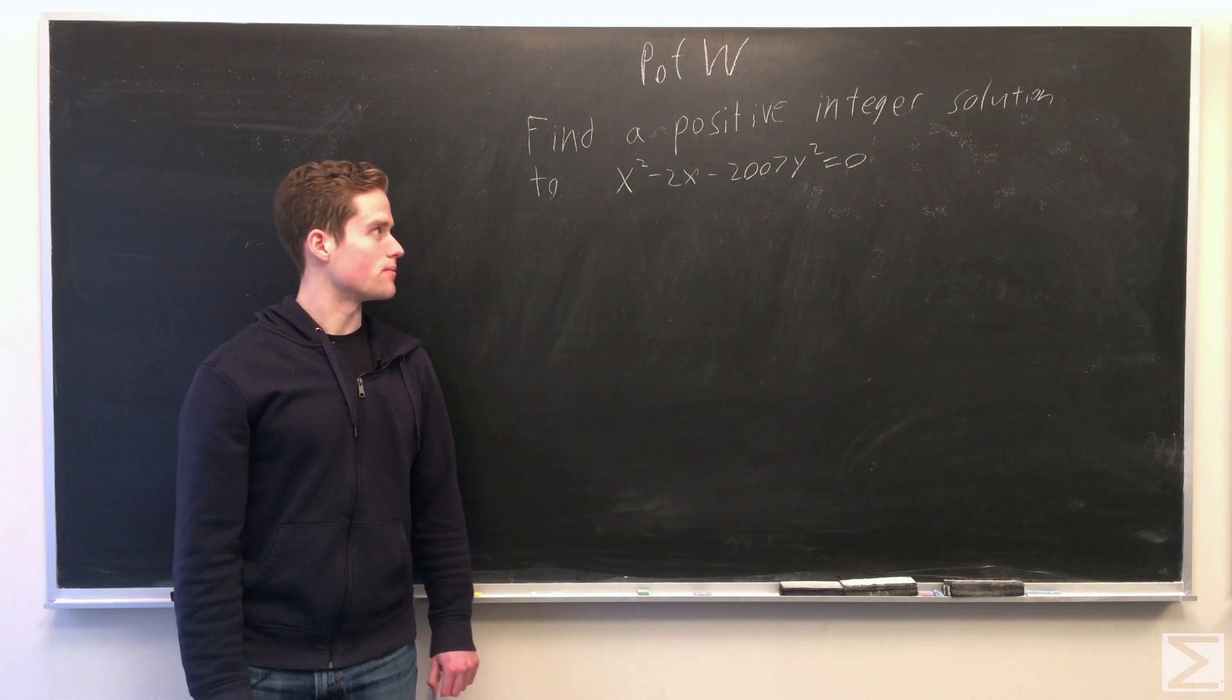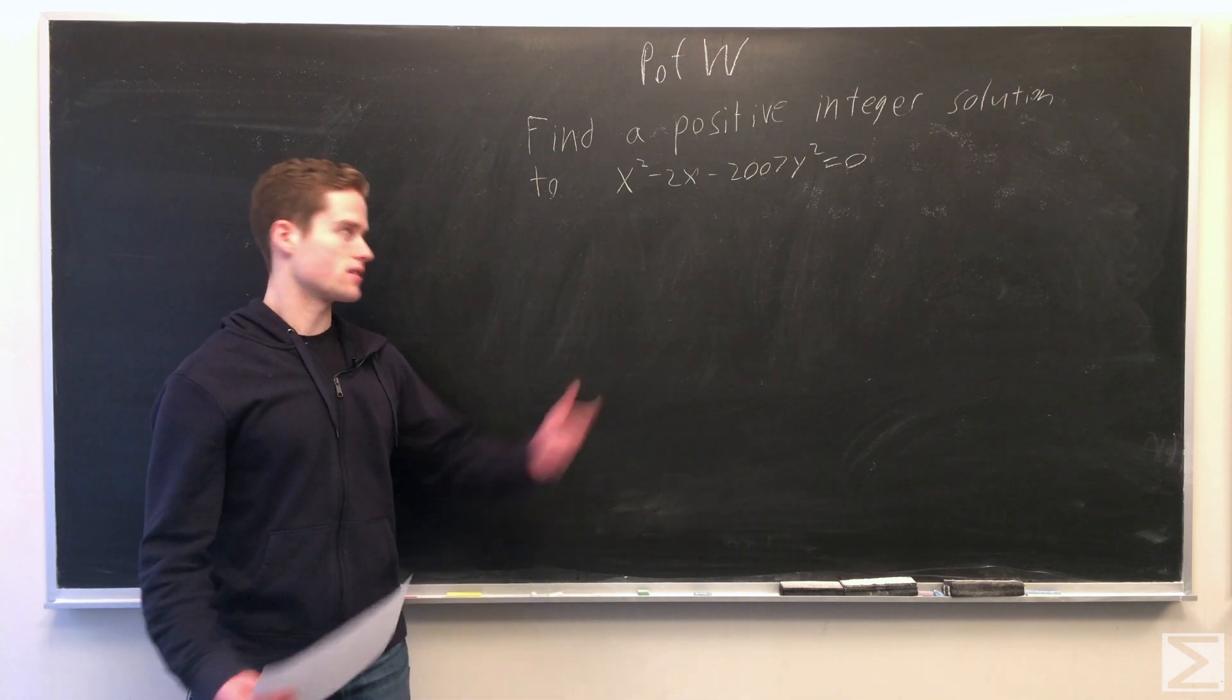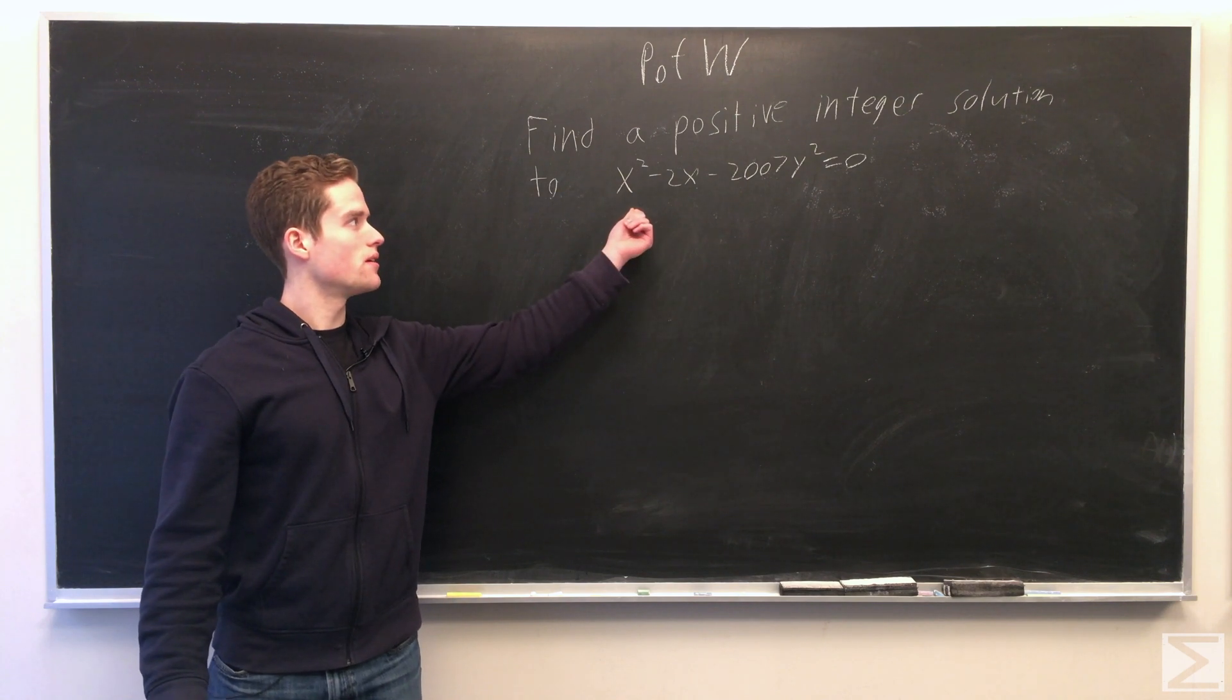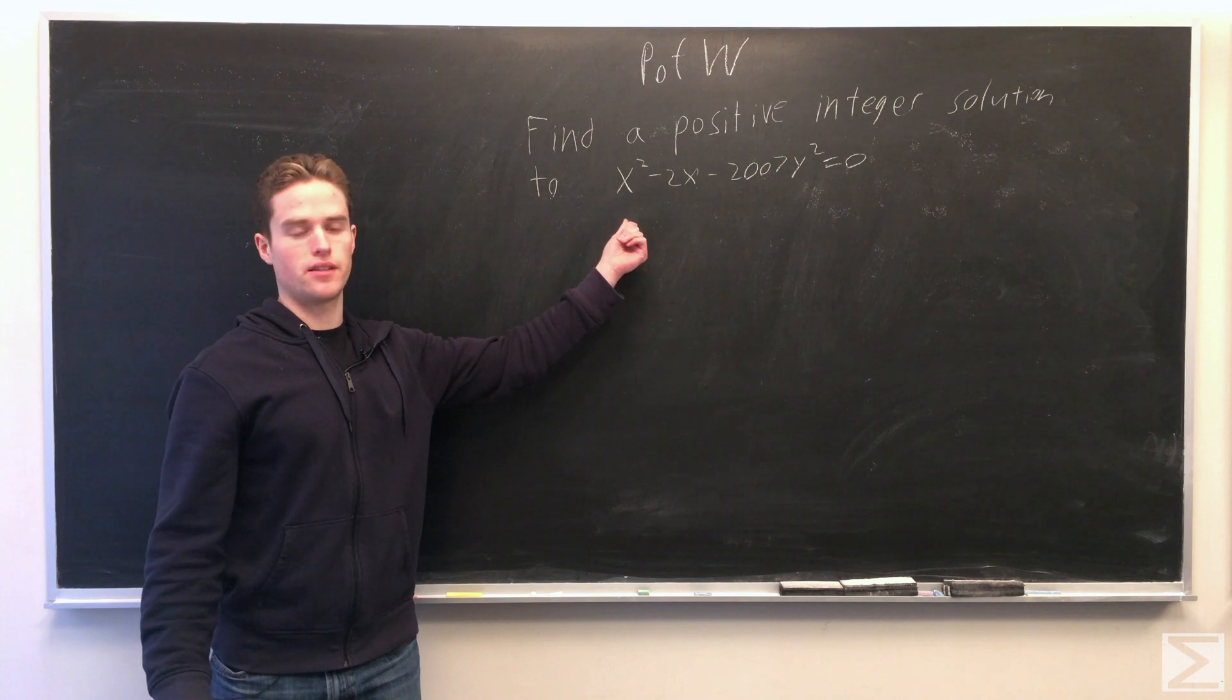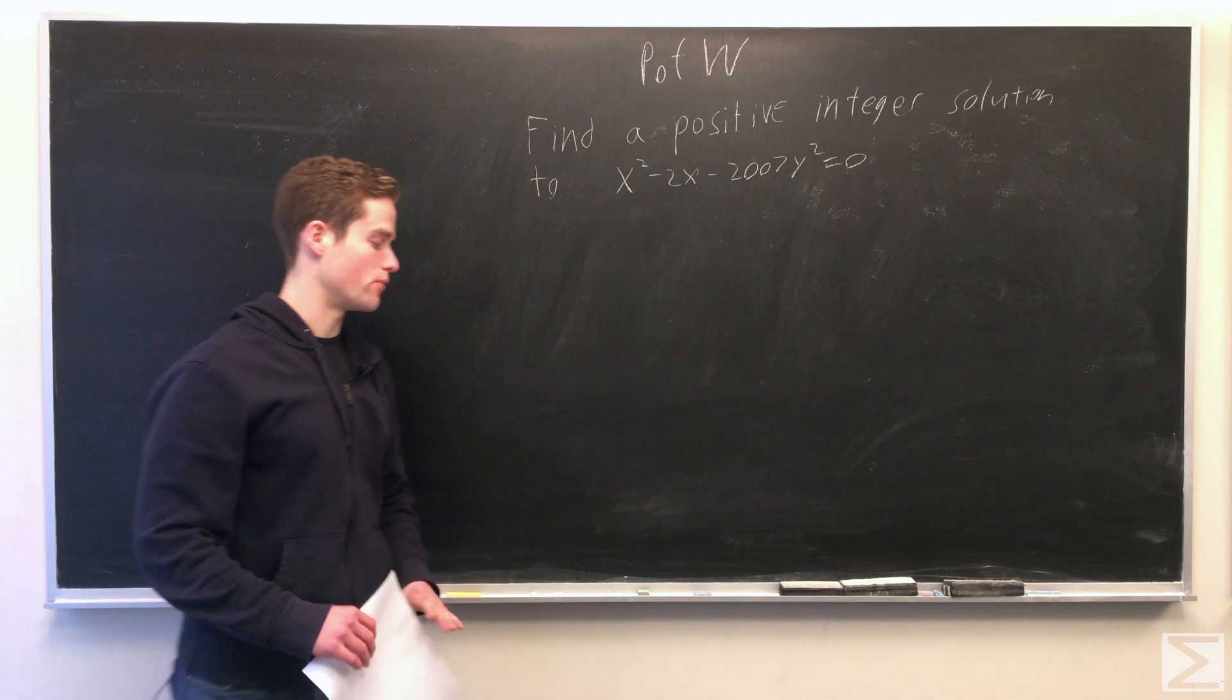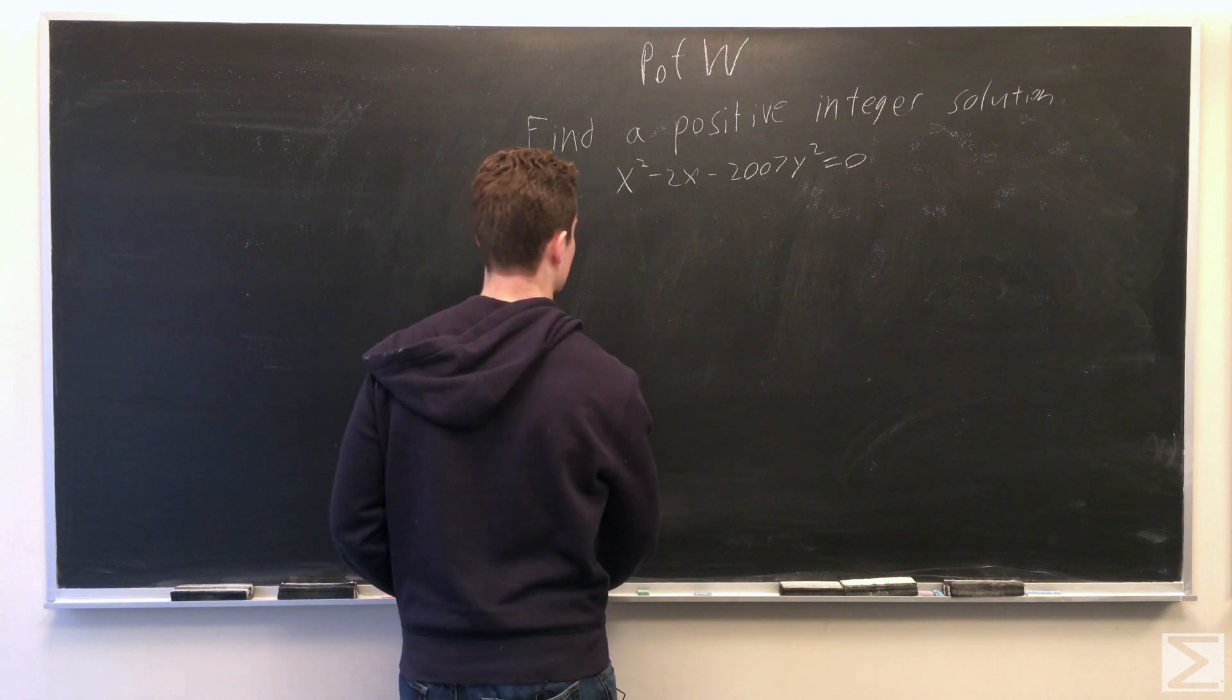We can write the x terms as x minus 1 squared minus 2000y squared equals 1. This is Pell's equation. We're not going to do this, though, because we just want to find one positive integer solution.